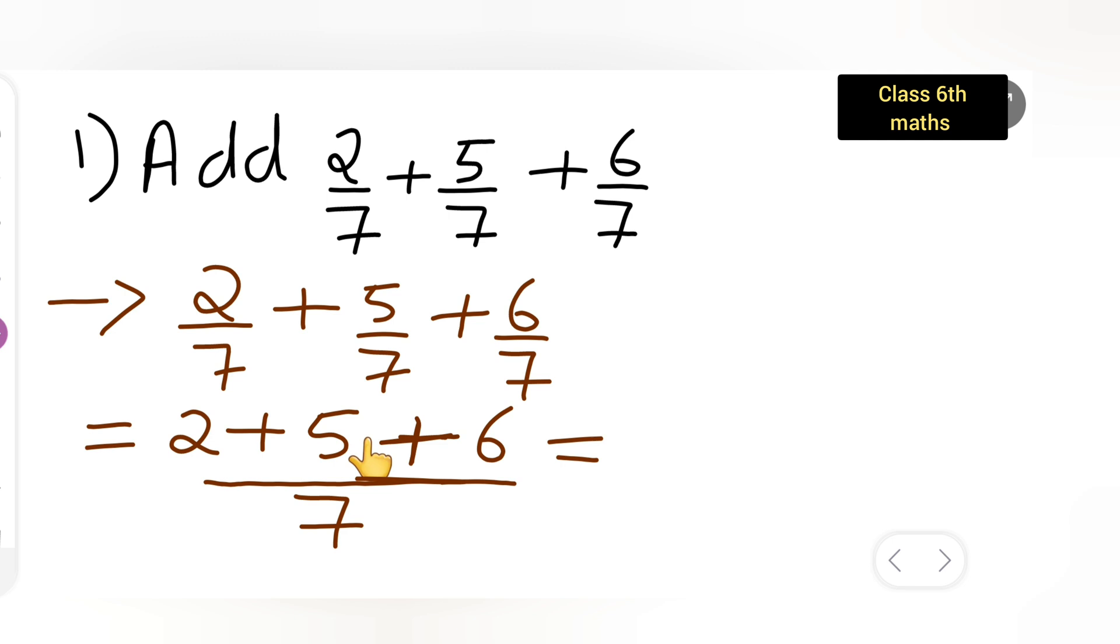Now I can write down 2 plus 5 is 7, so 7 plus 6 you will get 13. So I'll have to write down the answer is 13 upon 7.